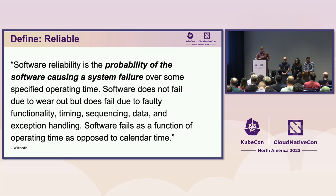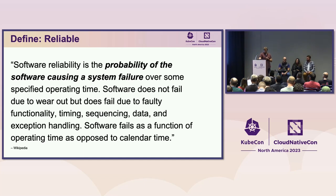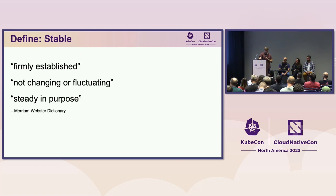To think about reliability, you need to think about the system and the software around Helm. For example, if Helm raises an error because it can't download a chart or communicate with a Kubernetes cluster, is the problem due to Helm or something else like a network problem? For Helm to be reliable, the errors need to be outside of Helm, even if Helm is the one reporting them. We want to focus on this reliability aspect — that Helm should not cause errors within its control.